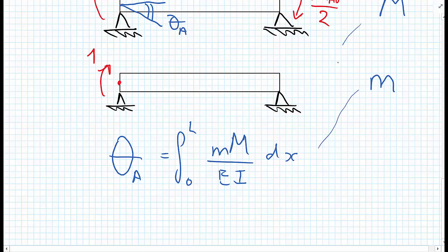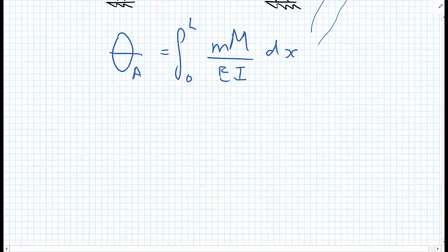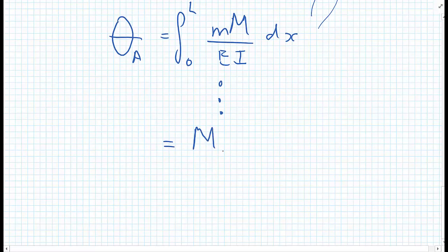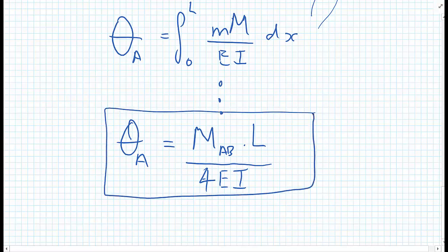Note that this M and this m are not the ones used before. Writing down the moment equations for little m and capital M and working through the mathematics, you'll find that theta A equals MAB multiplied by L, divided by 4EI. This is an important result we're going to use in displacement-based calculations where the unknowns are the displacements and rotations.